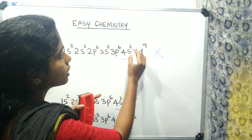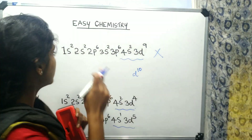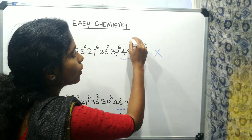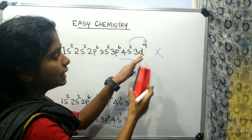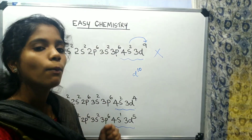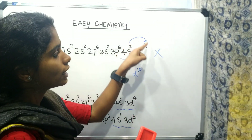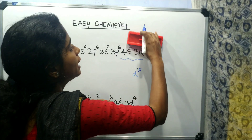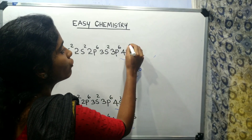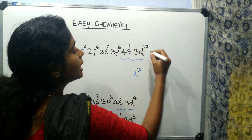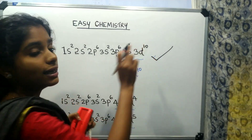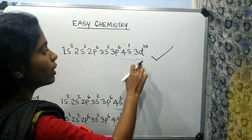So from 4s2 3d9, we count 9 electrons in the D sub-shell. To make it more favorable and stable, one electron is promoted. So one electron moves from 4s to 3d. This gives us 4s1 3d10 — the correct copper electronic configuration, with D sub-shell fully filled at 10.